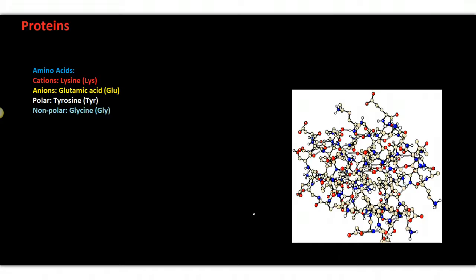There are four different types of amino acids, just like I was talking about in a recent video about the four different types of molecules within our body. There are cations, anions, polar, and non-polar molecules.